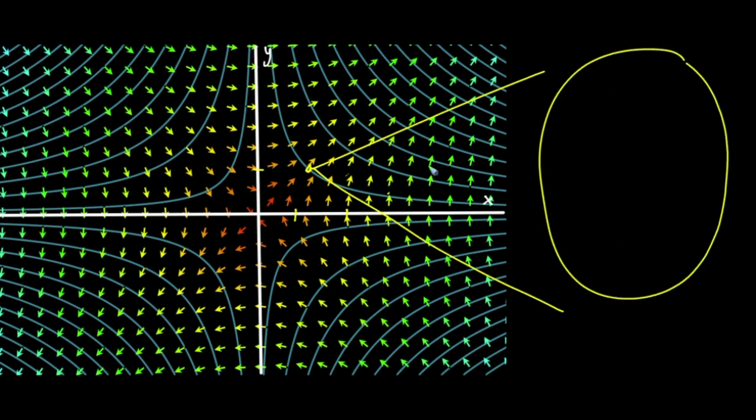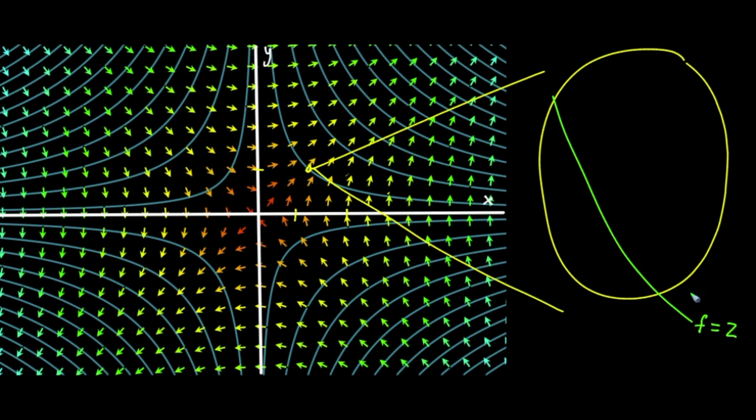So you've got some kind of contour line and it's swooping down like this. And that represents some kind of value. Let's say that represents the value f equals 2. And you know, it might not be a perfect straight line, but the more you zoom in, the more it looks like a straight line.